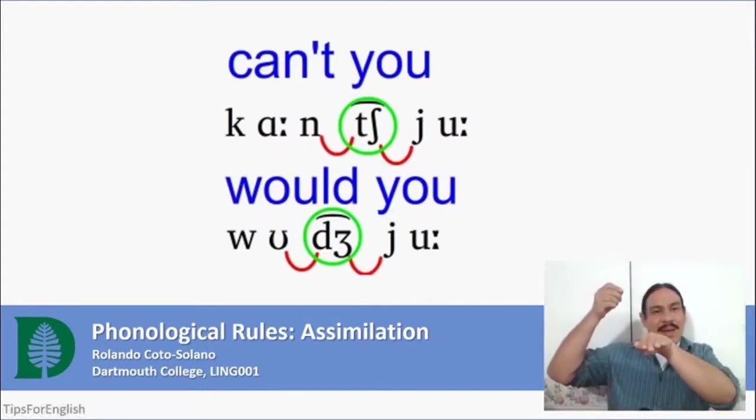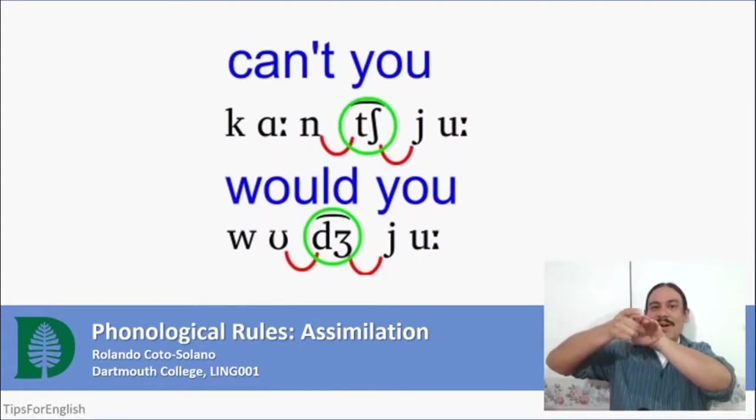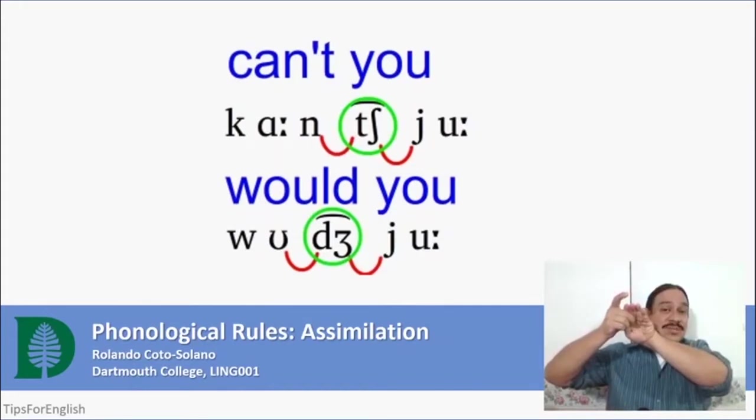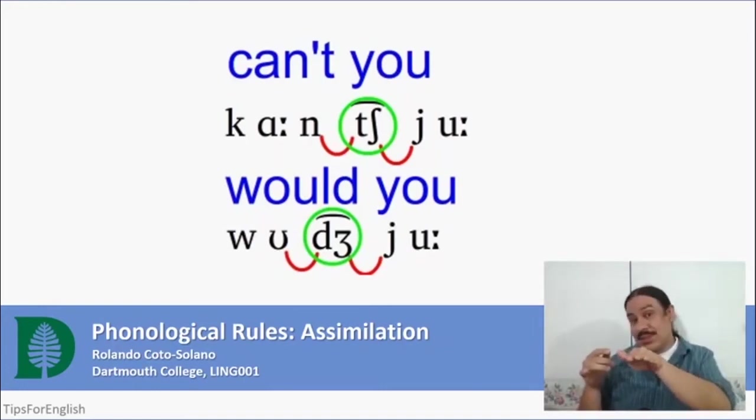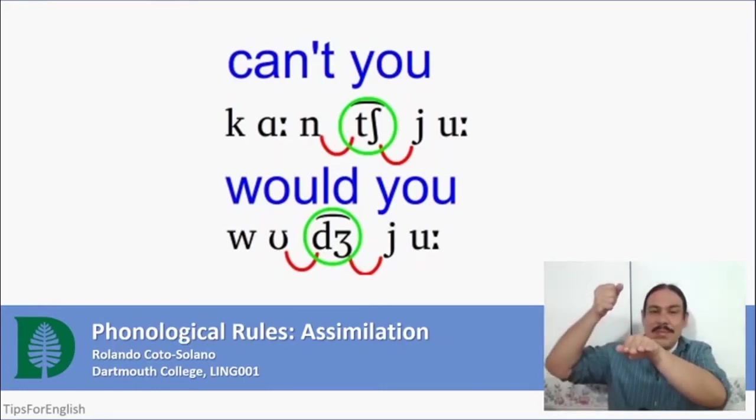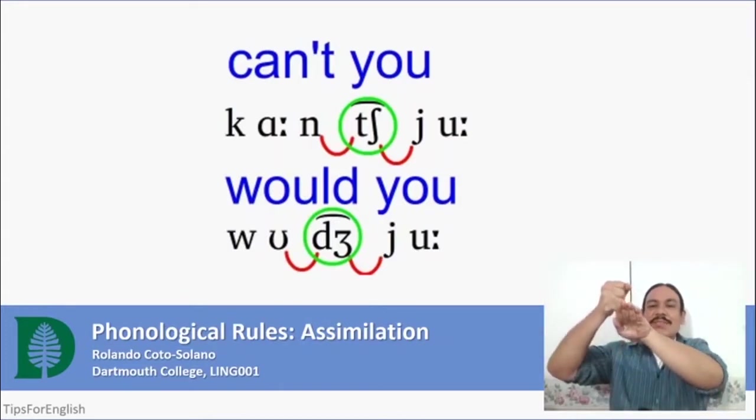How does assimilation occur? Assimilation is the process by which a minority integrates socially, culturally, and politically into a larger, dominant culture and society. Assimilation usually involves a gradual change of varying degrees. Full assimilation occurs when new members of society become indistinguishable from native members.